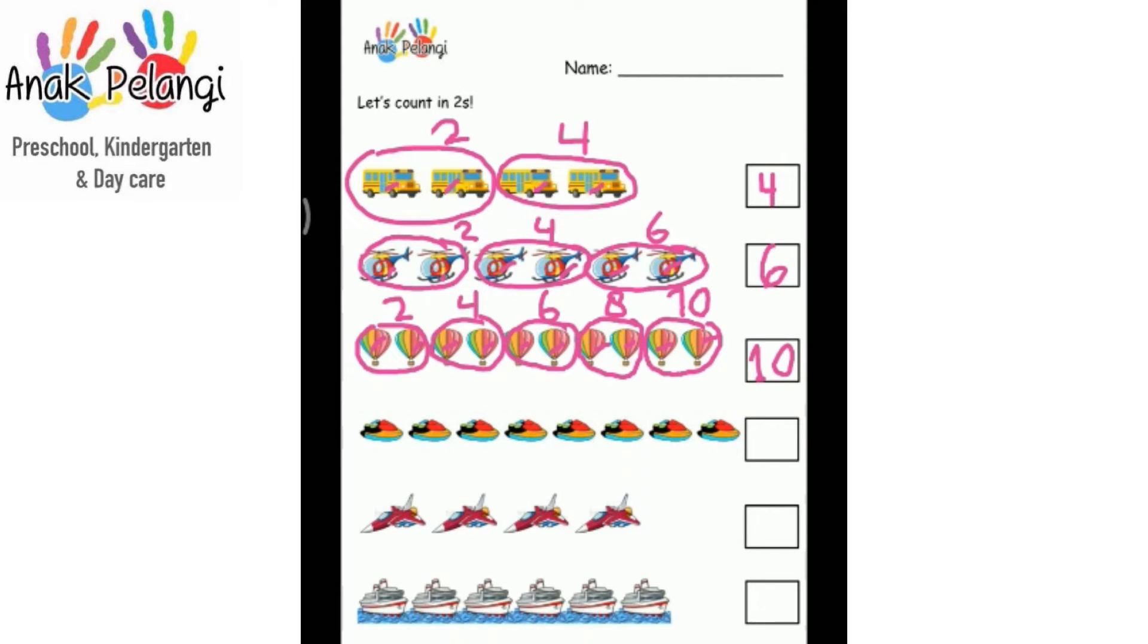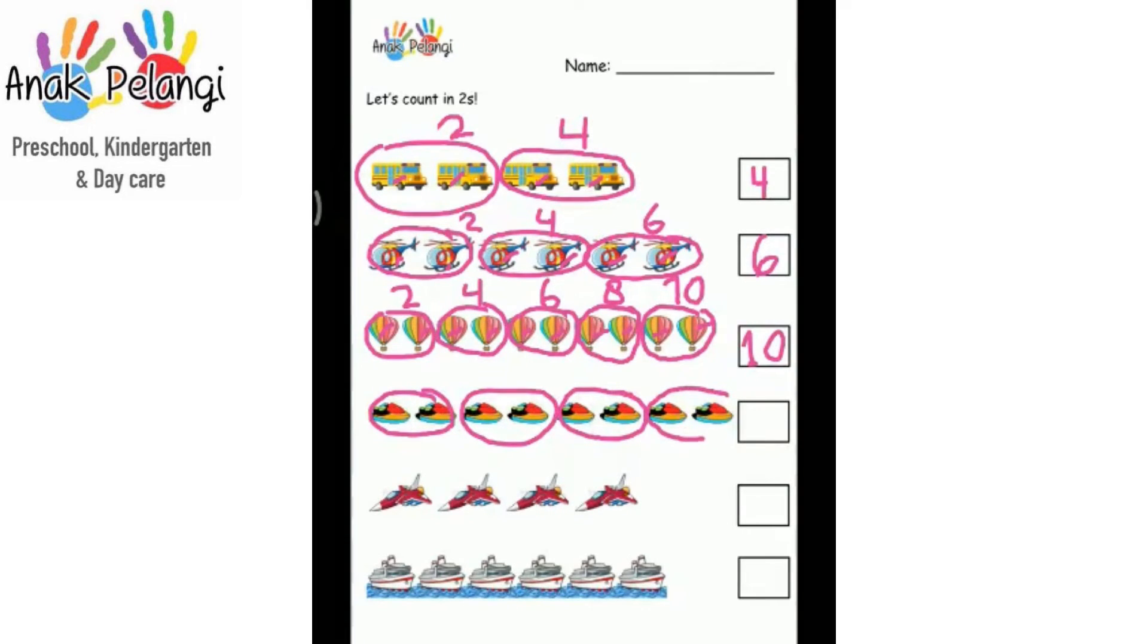Speed boots. Circle the speed boots in twos. Now count them in twos. One, two. Three, four. Five, six. Seven, eight. Two, four. Six, eight. How many speed boots are there? There are eight. Write eight in the box.